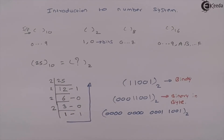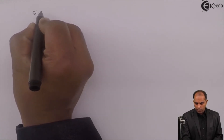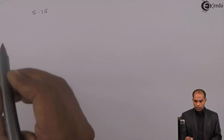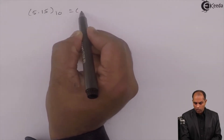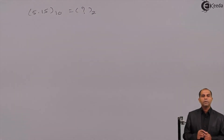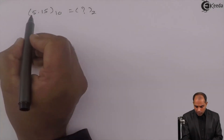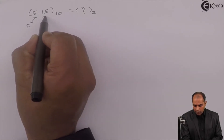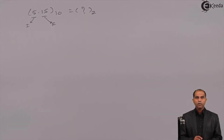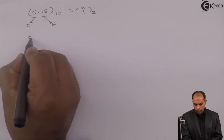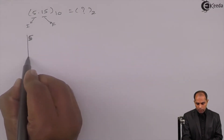This is how a number is converted into binary for integer values. What if we have fractional values? How do we represent fraction values? Suppose I take the value 5.15, which is a decimal fractional number. I want to convert this into binary. This will have an integer part and a fractional part. We convert the integer part separately and the fractional part separately. The integer part is 5.